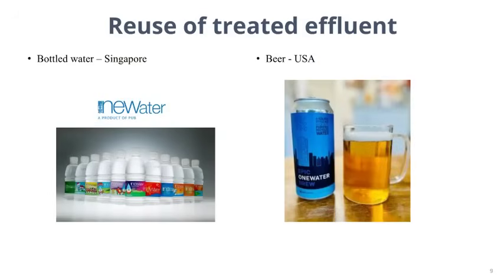Examples of treated water usage around the world include a Singapore-based company that produced bottled water from wastewater, and San Francisco-based Epic Cleantech, which made a beer using water recycled from a luxury apartment building. Known as Epic One Water Brew, it is made with water recycled from the showers, sinks, and washing machines of a residential building.